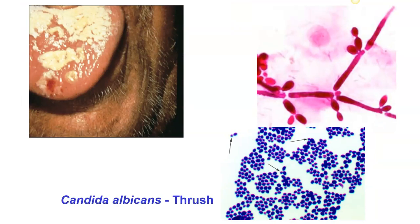This is Candida albicans. It causes thrush when it occurs in the oral cavity, and a yeast infection when it doesn't. When you look at the mycelium, you can see two different types, so this is dimorphic — the mycelium form occurs at room temperature, and the yeast form occurs at body temperature. When found in the oral cavity, it is often an indication of a compromised immune system, such as in infants under one year of age or people with HIV. It can be treated topically with gentian violet, which tends to kill off the spores very quickly.